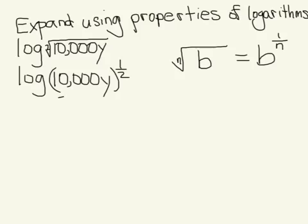So we're using that property to rewrite the expression. Now I did need to use parentheses around the 10,000y because both of those parts are inside the radical. If there's more than one thing inside the radical, make sure that you wrap it up in parentheses before you put the exponent on.